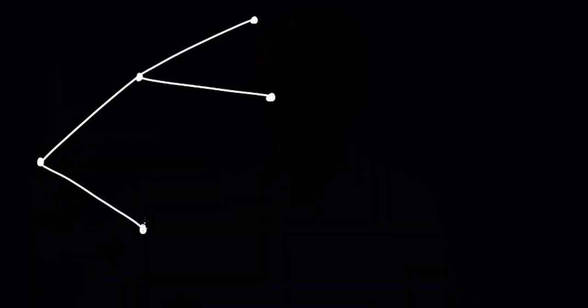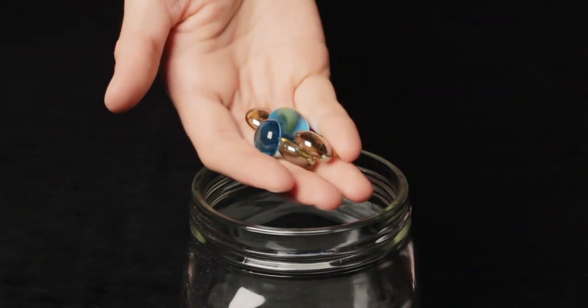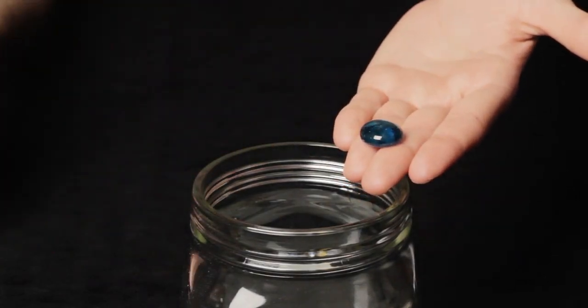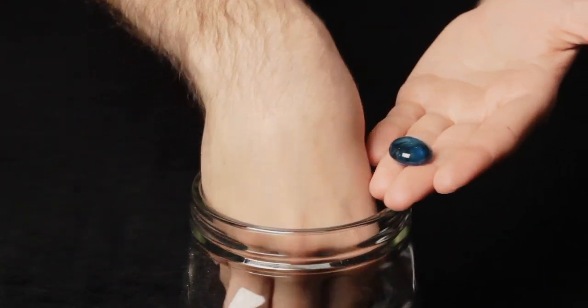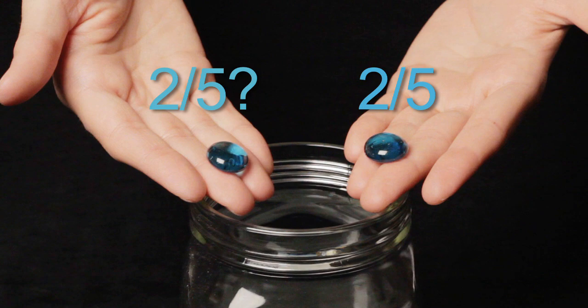We've seen how tables can help us organize our data and visualize changes in the sample space. Let's look at another tool useful for understanding conditional probabilities: a tree diagram. Suppose we have a jar containing five marbles — two are blue and three are yellow. If we draw any one marble at random, the probability of drawing a blue marble is two-fifths. Now, without replacing the first marble, draw a second marble from the jar. Given that the first marble is blue, is the probability of drawing a second blue marble still two-fifths? No, it isn't.